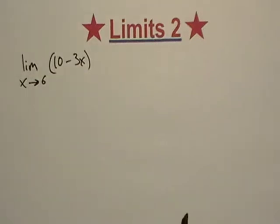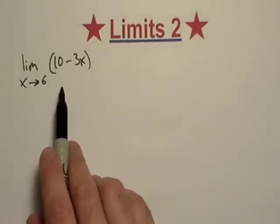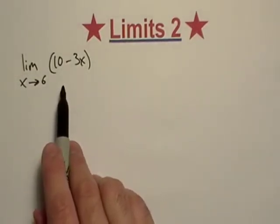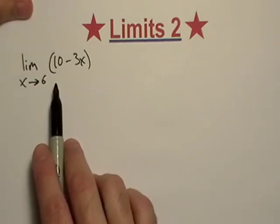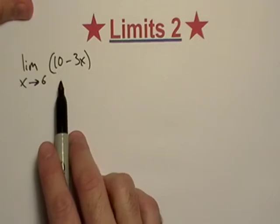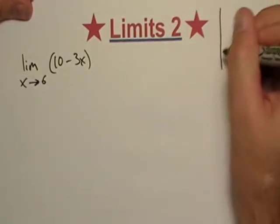Okay, let's actually evaluate some limits. The first and probably best thing you should do is direct substitution. So basically we're looking at the function f of x equals 10 minus 3x and let's just sketch it out real quick.